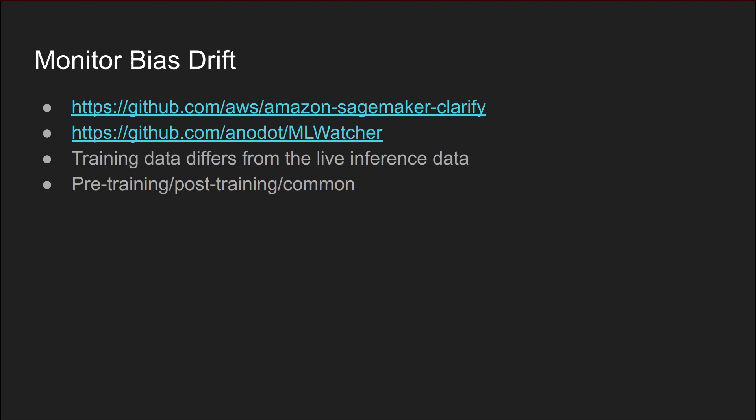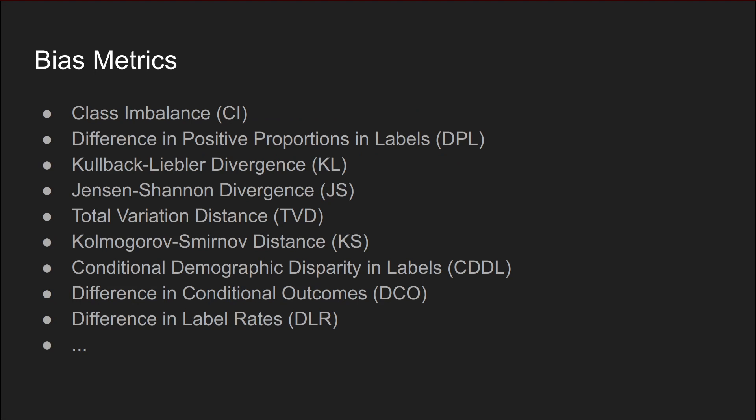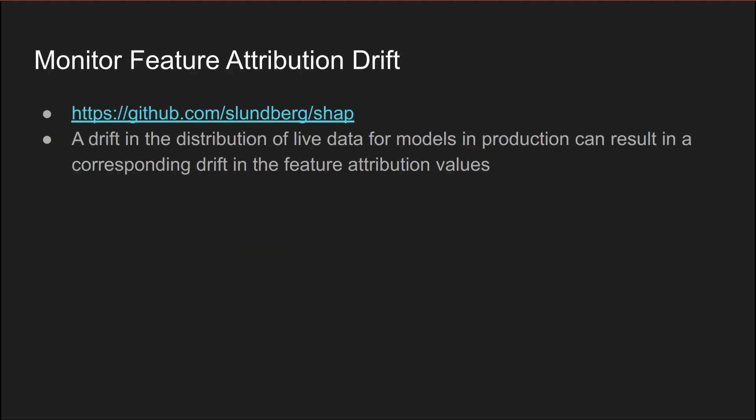Model bias drift monitoring is targeted at detecting a difference between live data and the training set data. Most tools allow detecting bias based on gender, religion, race, and other attributes — the metrics are wide and quite interesting. Similarly, feature attribution drift — how important a specific feature is for real-life inference — is also tracked in a CI/CD manner. The SHAP framework is a popular tool that combines a lot of the research and implementations.